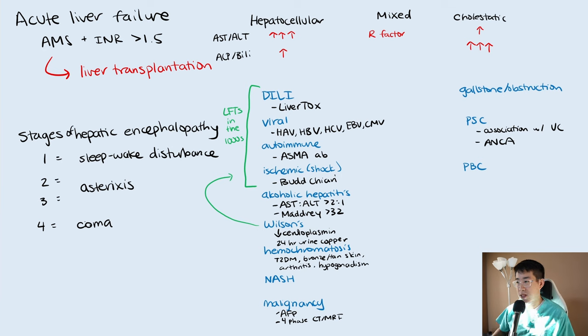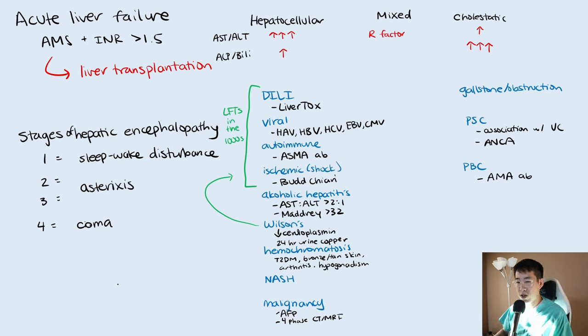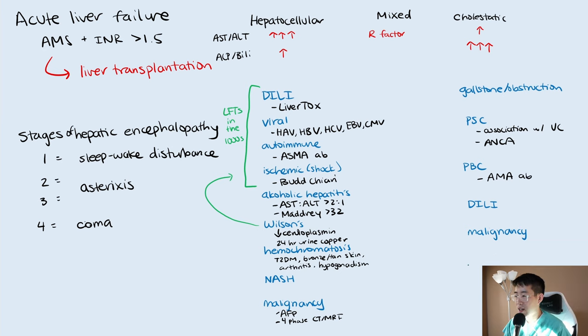If you have a middle-aged woman who is itching and suddenly jaundiced, you would think of primary biliary cholangitis, which is associated with the anti-mitochondrial antibody — don't confuse this with the anti-smooth muscle antibody, as they sound similar but are for different diagnoses. Drug-induced liver injury also shows up here, as does malignancy — especially pancreatic malignancies and cholangiocarcinoma — and various infiltrative diseases can cause a cholestatic pattern mainly due to obstruction.